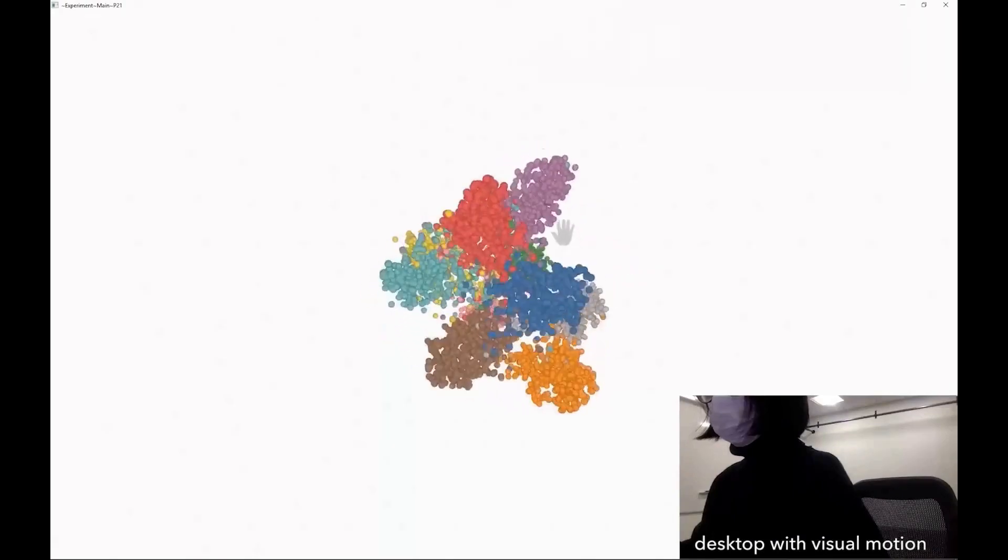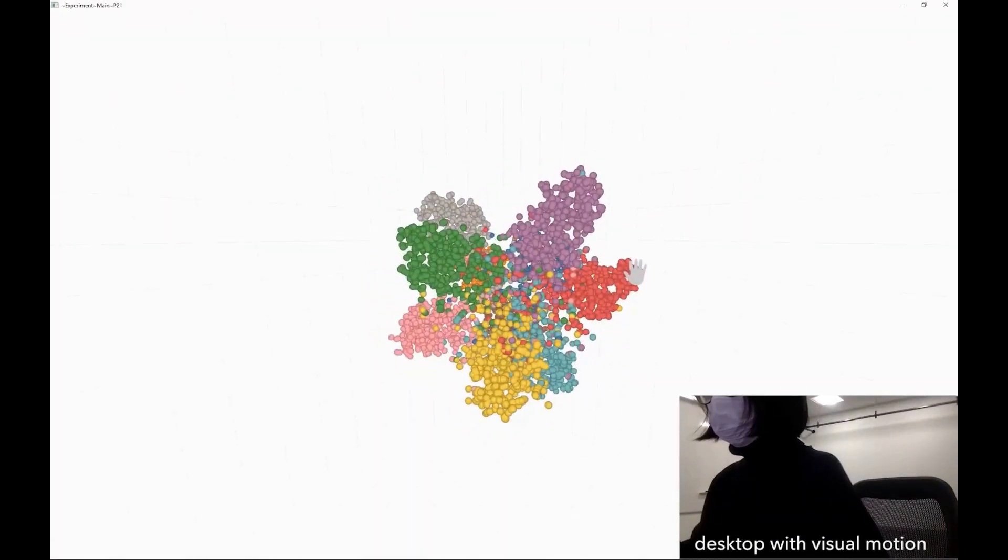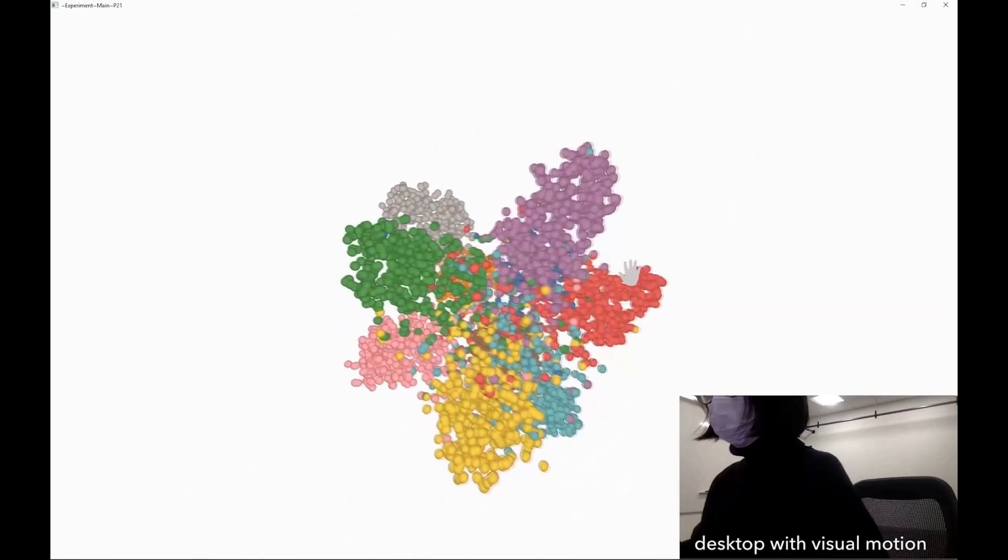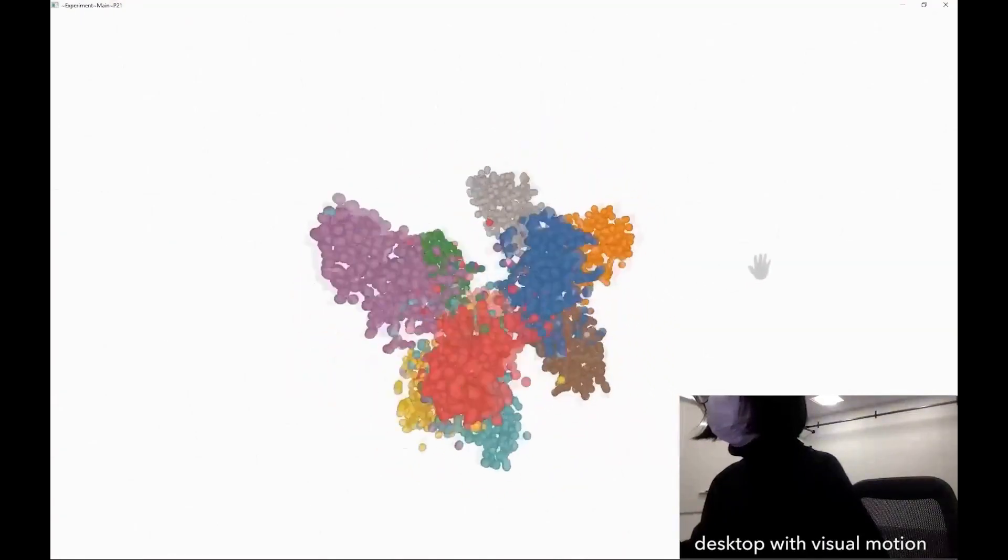I give two examples of our experimental conditions here. The first one is a desktop-based condition with visual motion. The user can navigate the scene using her keyboard. She can also rotate the scatter plot around its center.